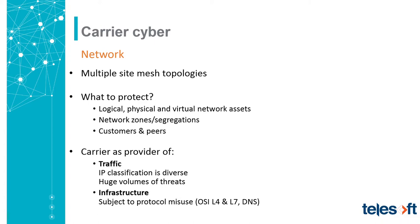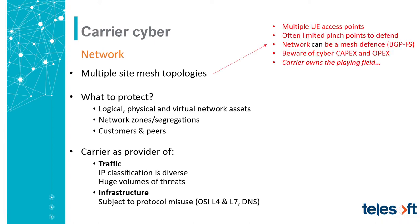In a multiple-site mesh topology, there are many user equipment access points and open network entry points, meaning there are limited pinch points to defend. However, that can work in your favor: although the network is a mesh topology, it can also be a mesh defense. Using things like BGP flow spec, you can detect a threat appearing in one part of your network and effect a suitable defense over all of your network, preventing it from going any further. It means you can defend multiple access points concurrently.